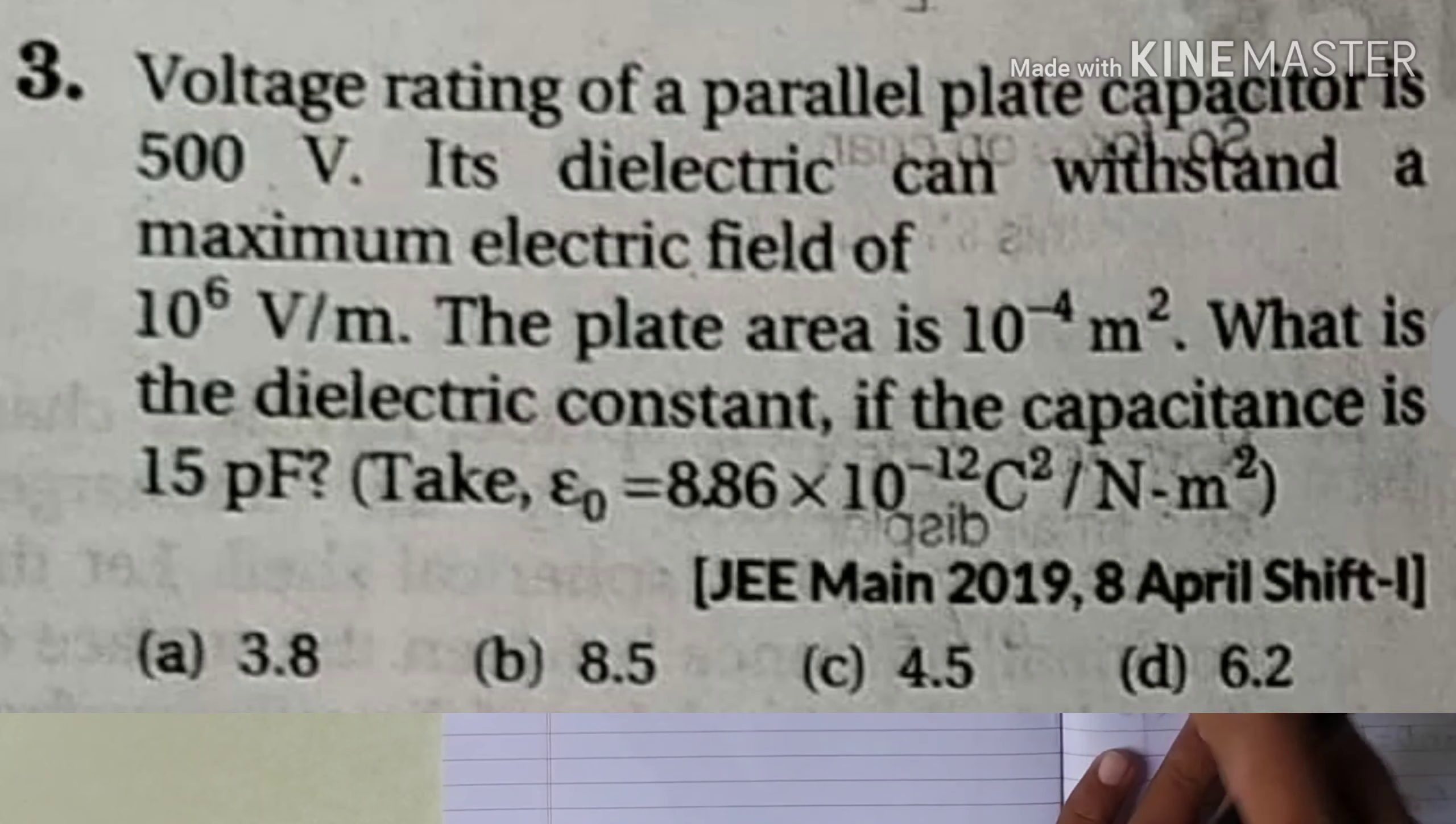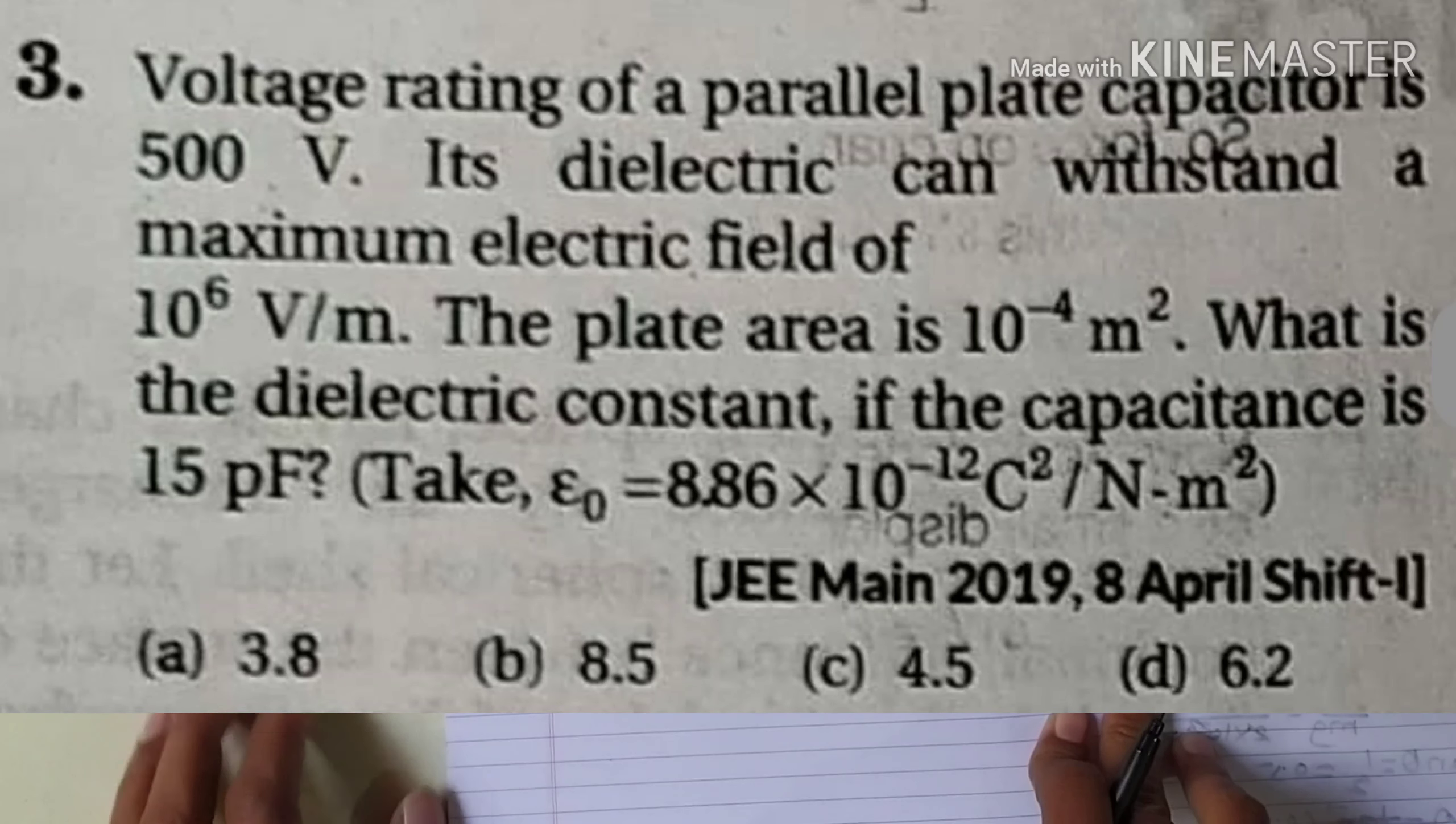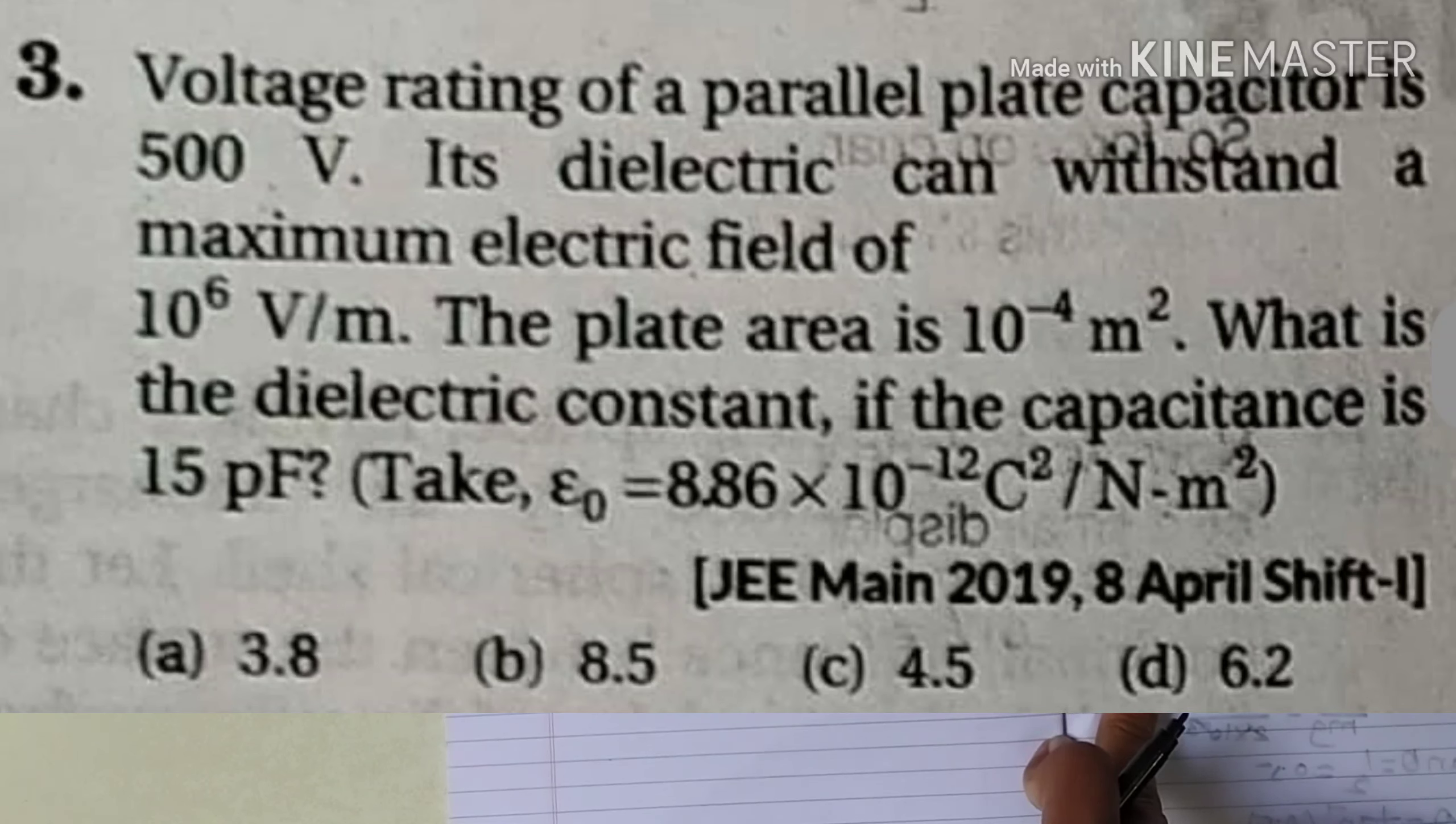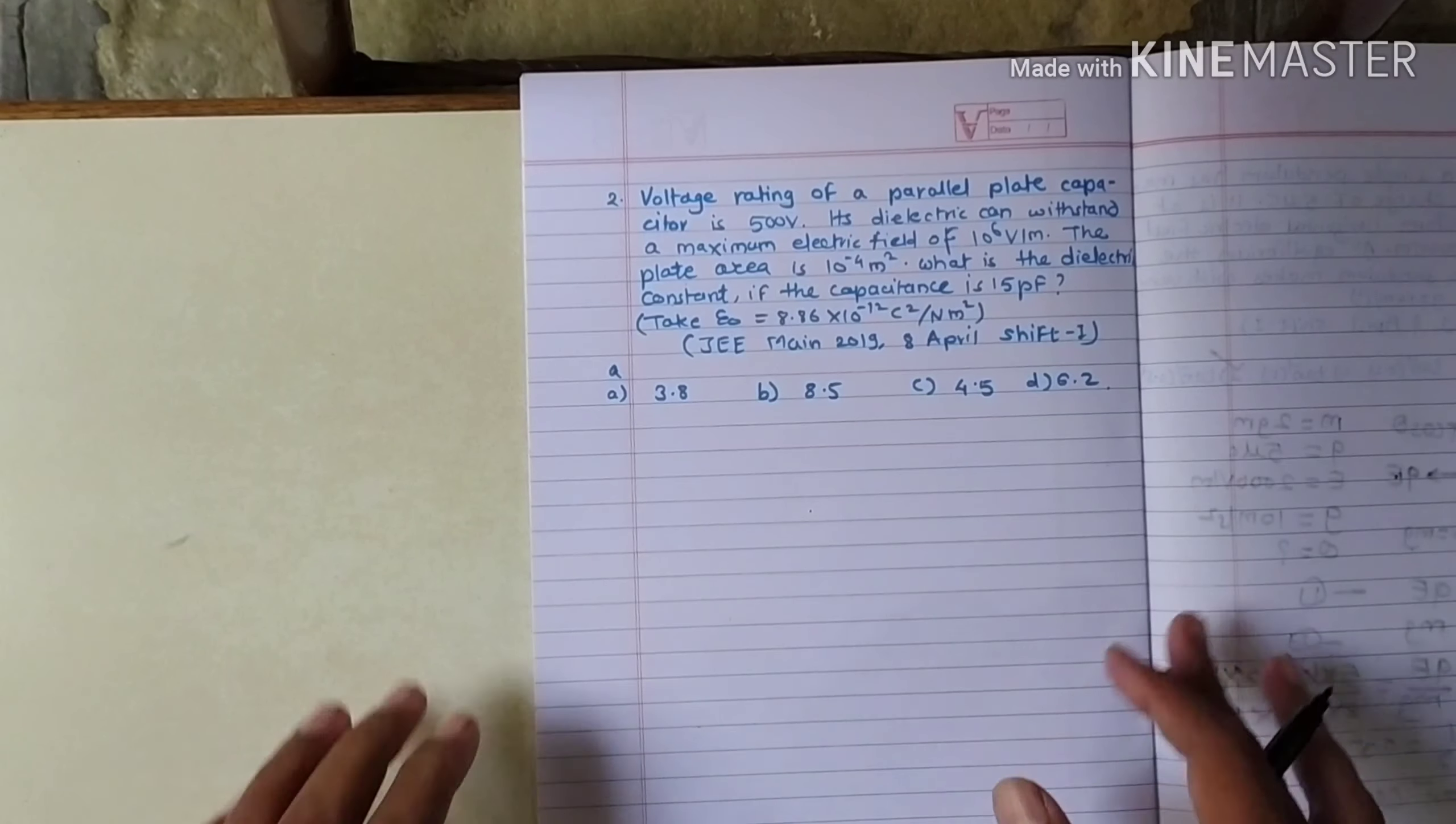Now we will ask the next question. This is also JEE Mains 2019, 8th April. Voltage rating of a parallel plate capacitor is 500 volts. Its dielectric can withstand maximum electric field of 10 raised to 6 volts per meter. The plate area is 10 raised to minus 4 meter square. What is the dielectric constant if the capacitance is 15 picofarads? Permittivity of vacuum is given. We need to solve this.